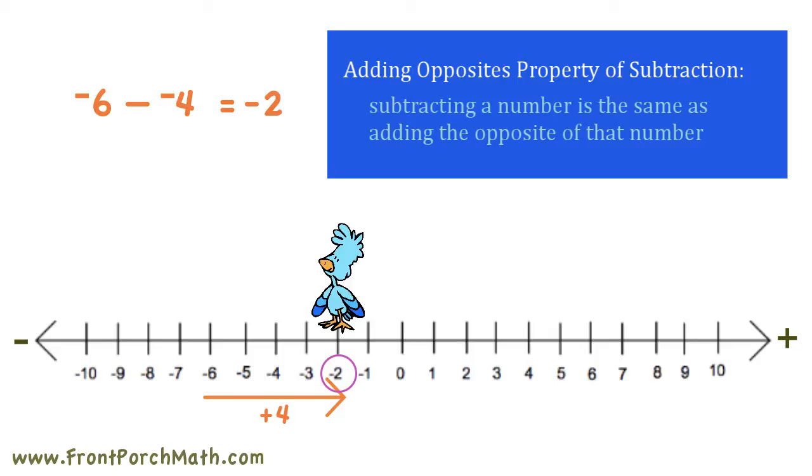If we go back to our original equation, negative 6 minus negative 4, we could think of it as negative 6 plus the opposite of negative 4. Well, the opposite of negative 4 is positive 4, so we would have negative 6 plus 4.